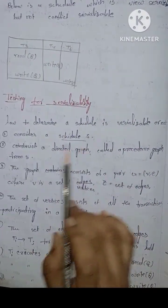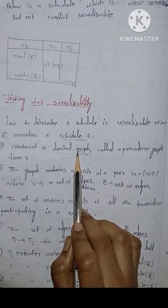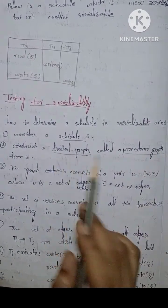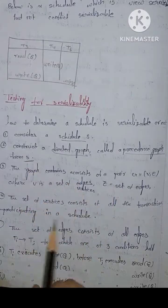Consider a schedule S. Construct a directed graph also called a precedence graph. In our directed graph, we have precedence graph formed from S. S means schedule.